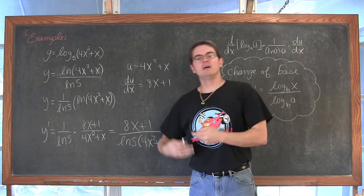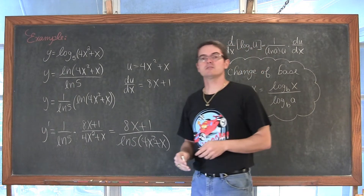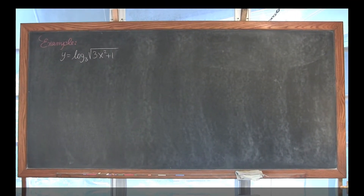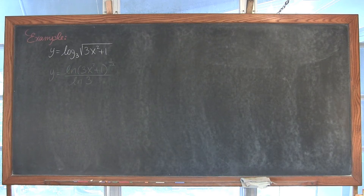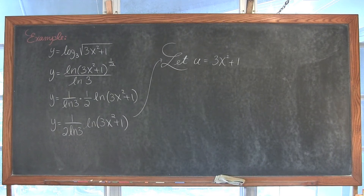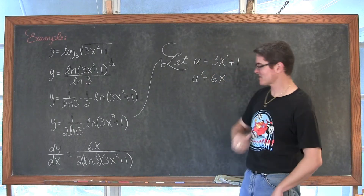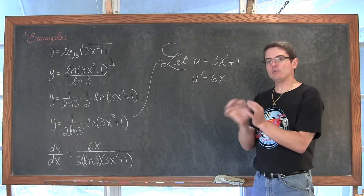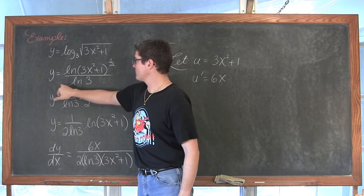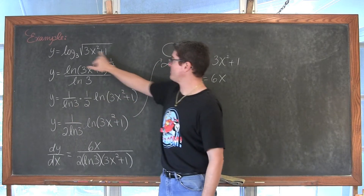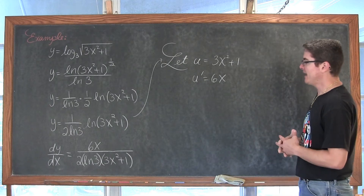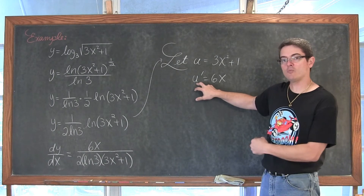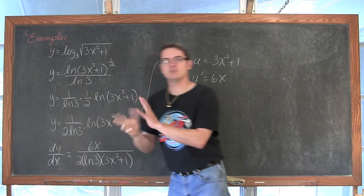The next one I am going to let you do on your own. I will bring it up here and reveal the solutions one step at a time to allow you to practice. y prime is equal to 6x over 2 times natural log of 3 times 3x squared plus 1. If you have a little trouble with fractions, I like to let the natural log of 3 come out and show 1 over natural log of 3, then bring down that power of one half so you can more easily see how the numerators and denominators line up.